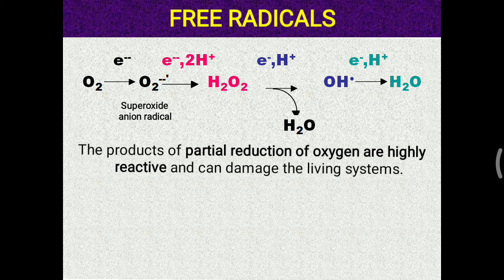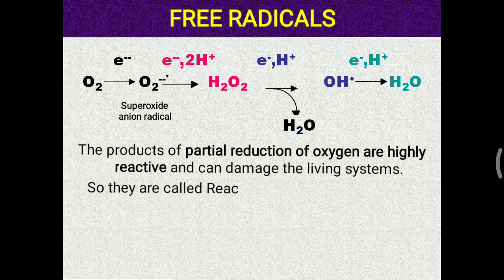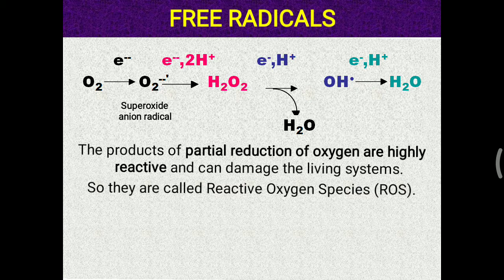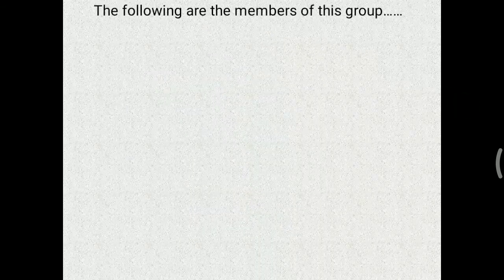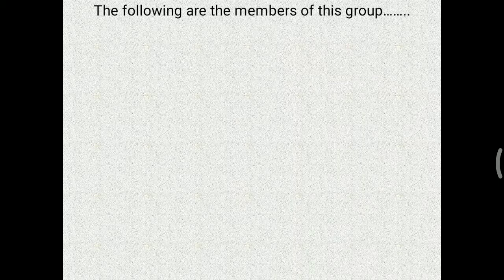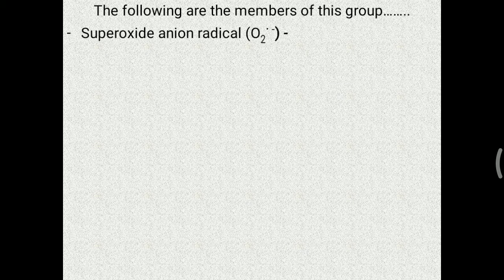Products of partial reduction of oxygen are highly reactive and can damage living systems. Since all these species are produced from oxygen, they are also called reactive oxygen species, or ROS for short. That is about the free radical.